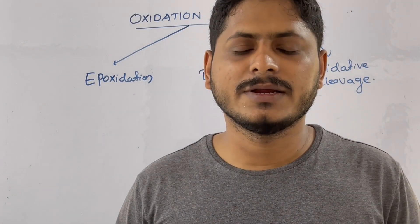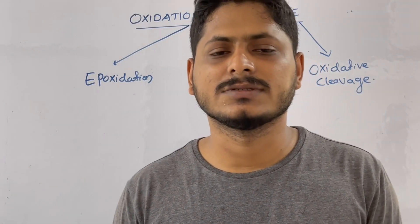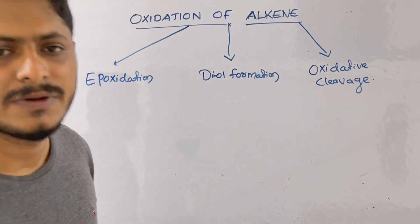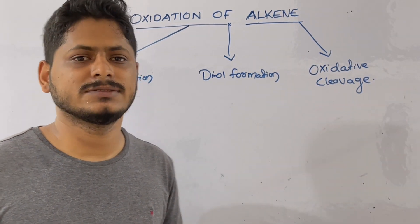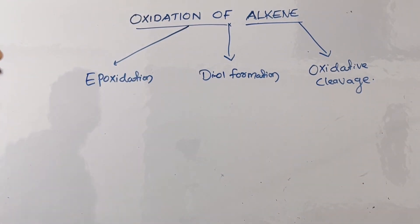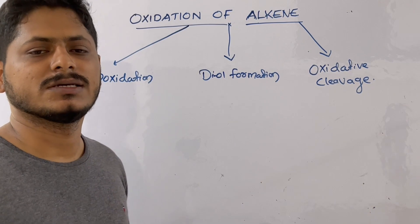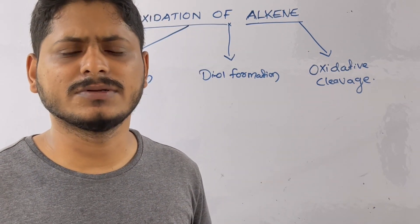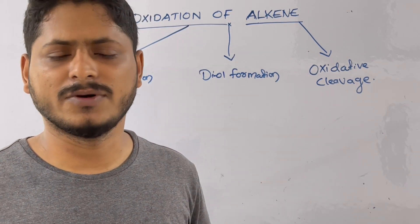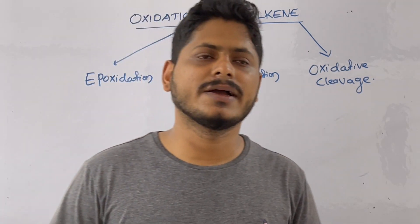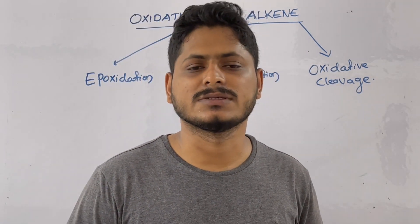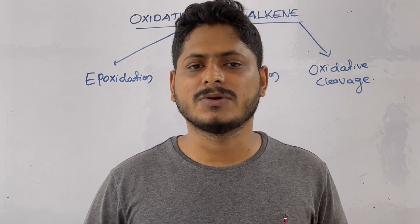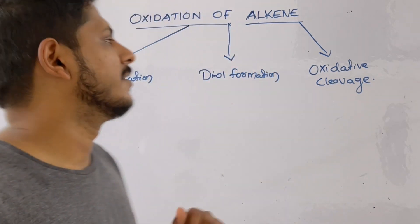Hello students, welcome to Royal Chem chemistry lesson. Today we are going to continue with our oxidation reagents. Last class we were discussing about the oxidation of alcohol — chromium-based oxidation and manganese-based oxidation. Today we are going to discuss about the oxidation of alkene.